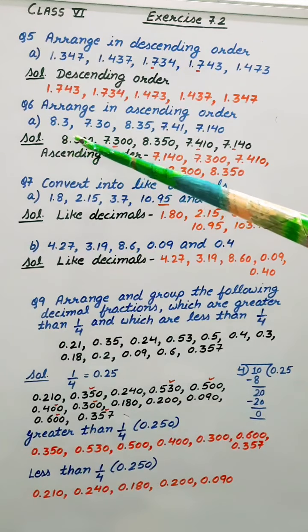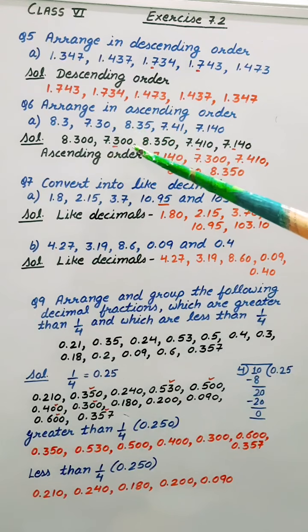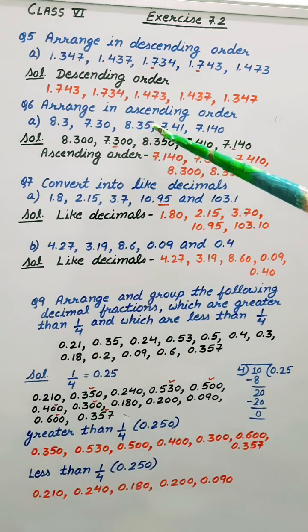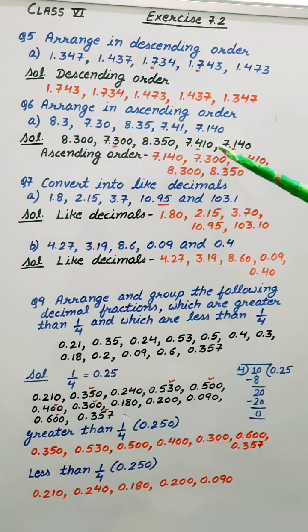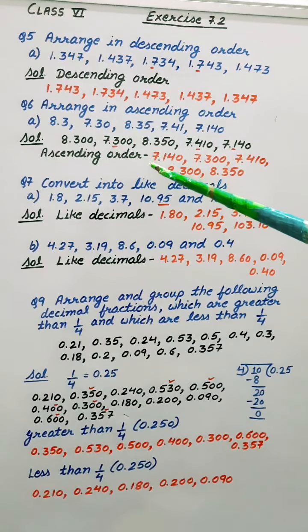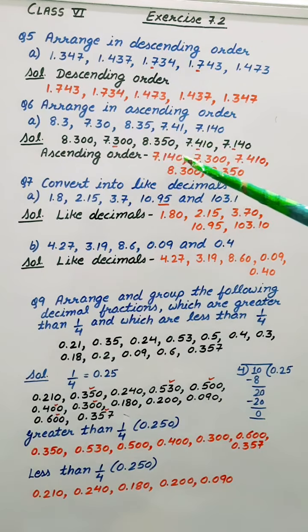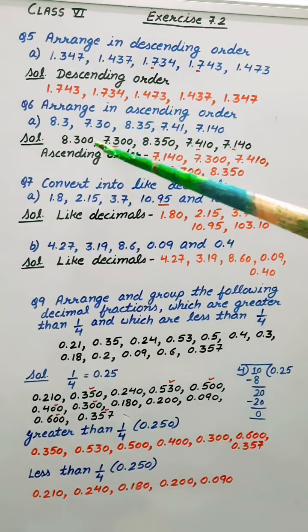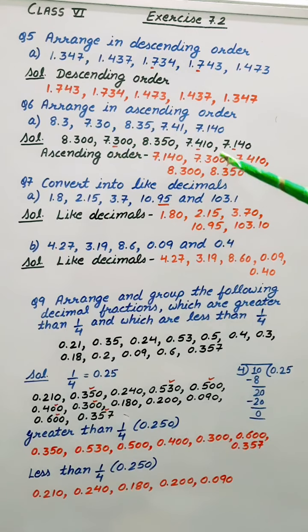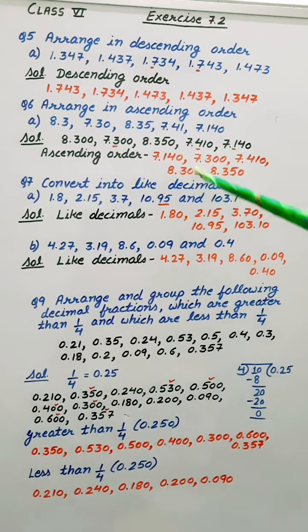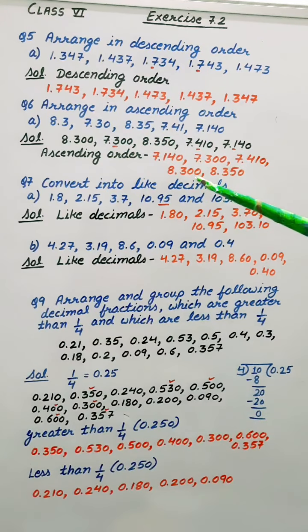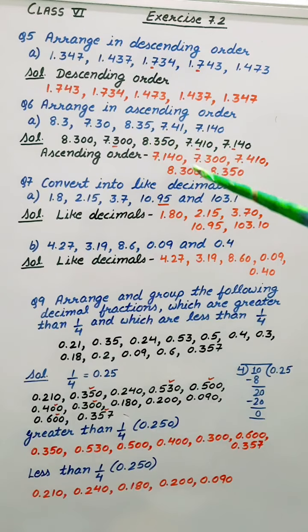So we have done 8.300. Here also 10 will come. Here also. Here also. Now let's write it in ascending order. So the smallest one 7.140. Next we have 7.300. Next 7.410. After that 8.300 and the greatest one is 8.350.